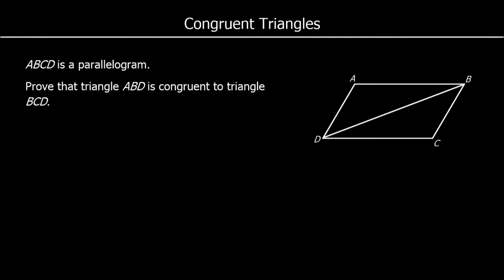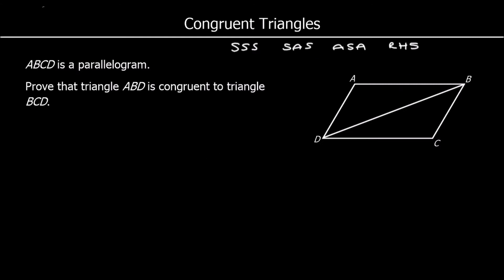Let's look at some questions. Here we've got ABCD as a parallelogram, and we need to prove that triangle ABD — the triangle on the top — is congruent to the triangle on the bottom. We need to get to a position where we can say either all three sides are equal, two sides and the angle in between them, two angles and the side in between them, or a right-angle triangle with the hypotenuse and one other side.